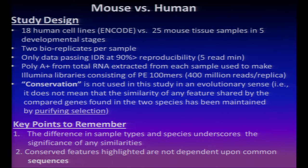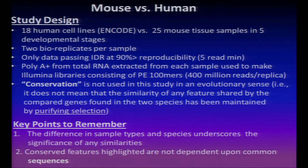The mouse and human studies differed considerably. We had 18 cell lines from the human study and 25 tissues from five different developmental stages for the mouse. Making comparisons and finding whether differences were actually attributable to the two different species would obviously be confounded by this fundamental change. On the other hand, if the dynamic range and variability of expression was maintained despite this variation in biology, there would be a story maintained across these differences.